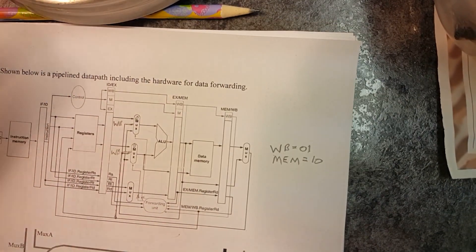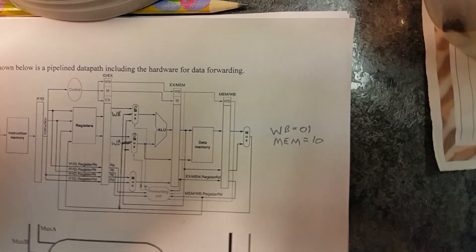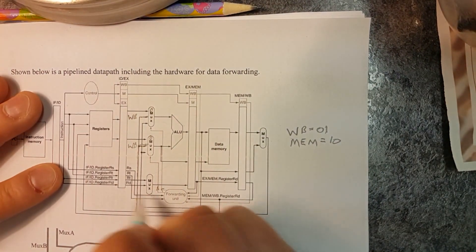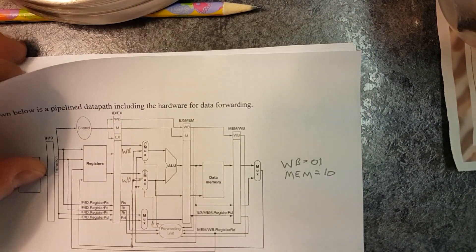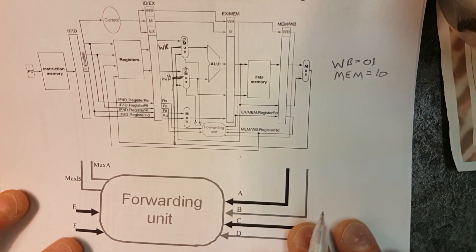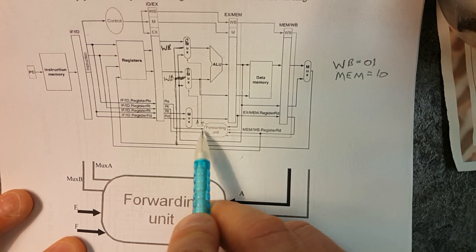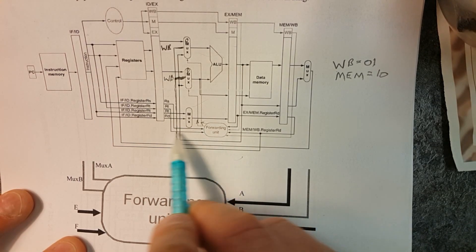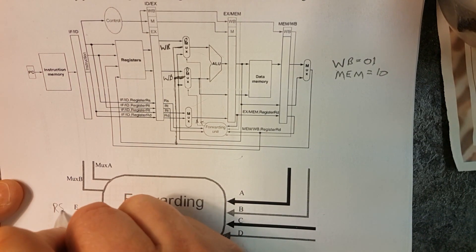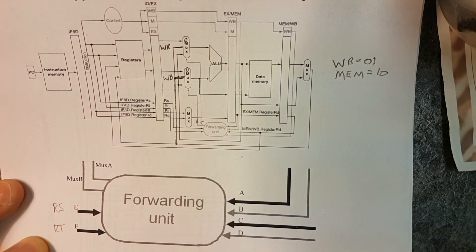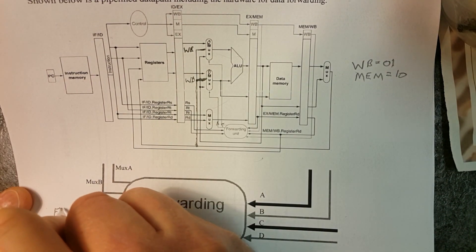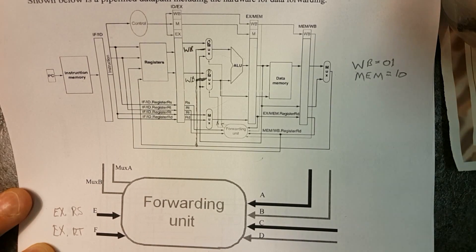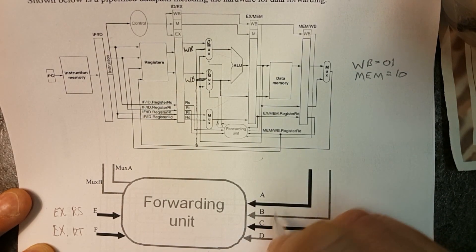Remember that we got our inputs and then the input here, I'm going to write it down on our forwarding unit here. So we trace this in. Now E is going to be this line right here and E, if we trace it back, is going to be our RS. This is going to be our RT, but they're going to be from the EX phase, so we need to mark them with their corresponding stage: EX.RS, EX.RT.